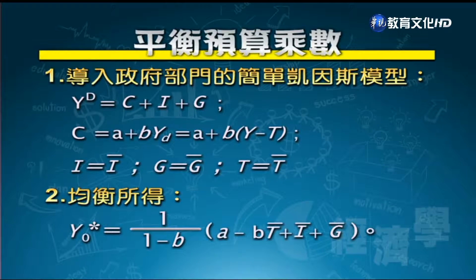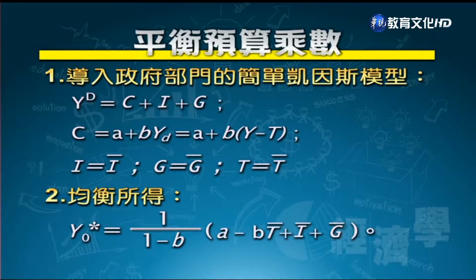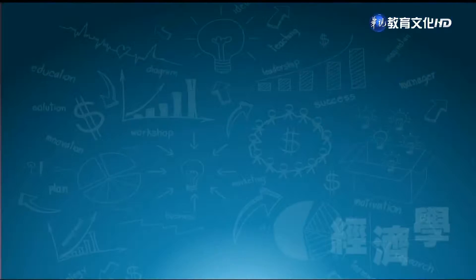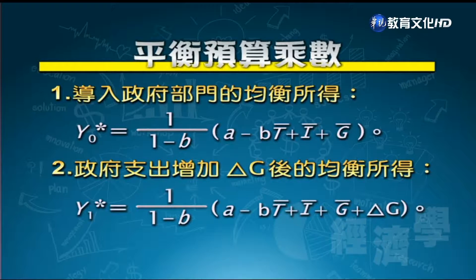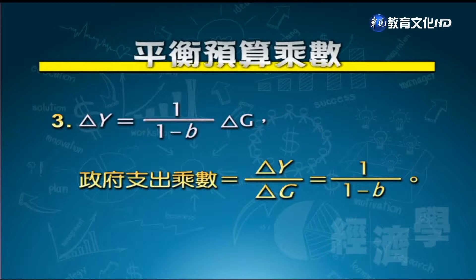複習模型：有效需求 = C + I + G；C = A + BYD；I = Ī，G = Ḡ，T = T̄，均為固定常數。均衡所得 Y* = 1/(1-B) × (A - BT̄ + Ī + Ḡ)。如果政府支出 Ḡ 增加1塊，產出增加 1/(1-B) 塊，這就是政府支出乘數 = 1/(1-B)。